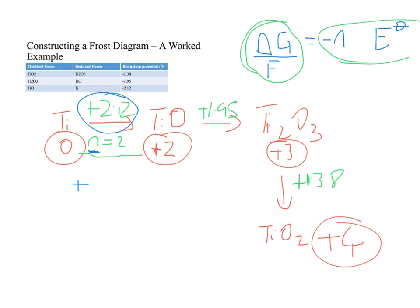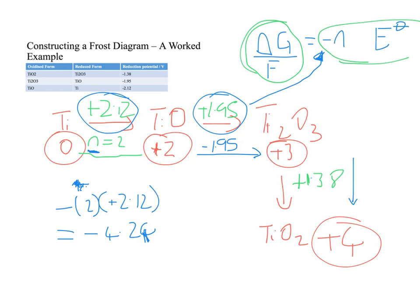What is delta G over F? It's n, the number of electrons in the process, multiplied by the potential of the process. For this first step, it's minus n is 2, multiplied by plus 2.12, which equals minus 4.24. When n equals 1, all you have to do is flip that sign because of the negative sign in this expression. So for this step, delta G over F is going to be minus 1.95. And for this step, delta G over F is going to be minus 1.38.